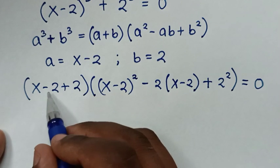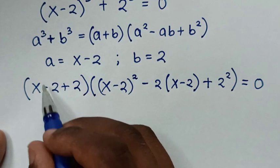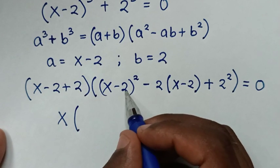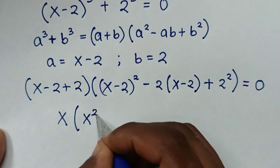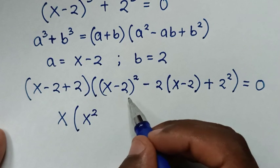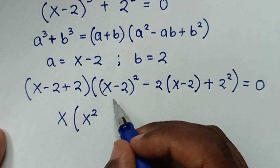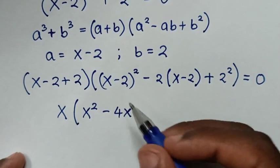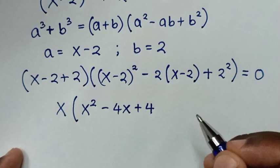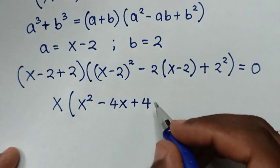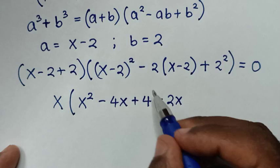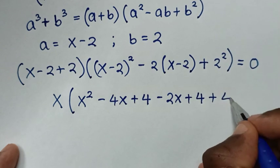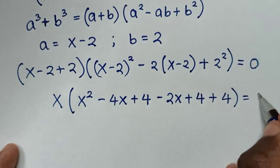In the next step, -2 + 2 = 0, so we are left with x. Expanding (x - 2)²: x·x = x², x·(-2) = -2x, (-2)·x = -2x, giving -4x, and (-2)·(-2) = 4. Then -2(x - 2) gives -2x + 4, and 2² = 4, all equal to 0.